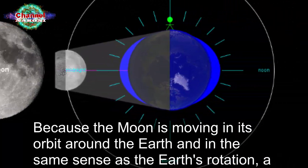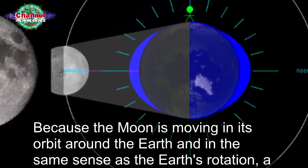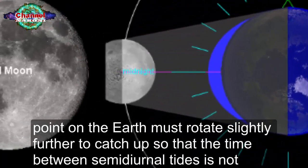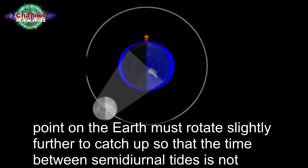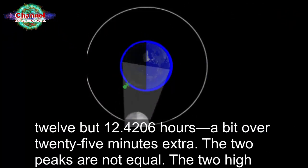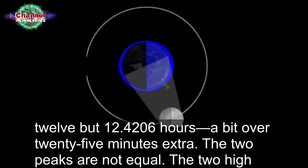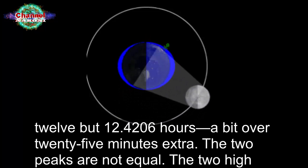Because the moon is moving in its orbit around the earth and in the same sense as the earth's rotation, a point on the earth must rotate slightly further to catch up, so that the time between semidiurnal tides is not 12 but 12.4206 hours, a bit over 25 minutes extra.